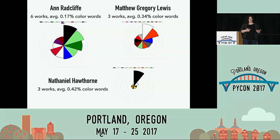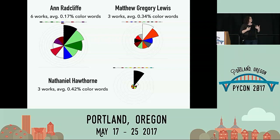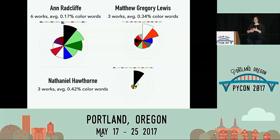We can also compare how different authors use color. This slide compares Ann Radcliffe, Matthew Gregory Lewis who wrote The Monk — an infamous novel from the late 18th century — and Nathaniel Hawthorne. There's a really clear difference in the way authors use color in their novels. Radcliffe has a lot of black but also a lot of natural colors — those greens and blues. Matthew Lewis uses a lot of whites and reds, which actually makes sense because his novels are a lot bloodier and sexier than Radcliffe's. Nathaniel Hawthorne is extremely dominated by black, but this is because one of the stories in our corpus is all about a black veil — so it's really important to go back to the corpus and make sure you're making a fair comparison.